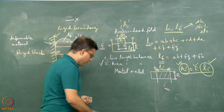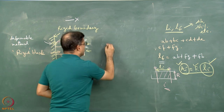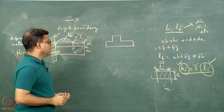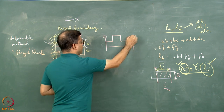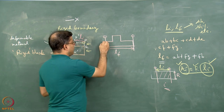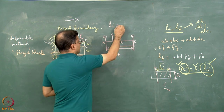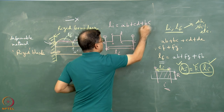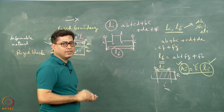Now, after the arrowhead fold, any or many other fold geometries can be worked out. For example, if it is a box fold, how do we proceed? If we go by the line length balance, I can take the pin lines over here and this distance is the length final. What is the length initial? I can again write A, B, C, D, E, F and the length initial is given by AB plus BC plus CD plus DE plus EF. Since Li and LF are known, the strain parameters can be calculated.